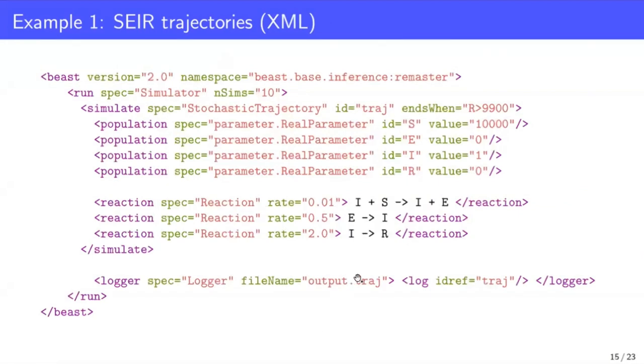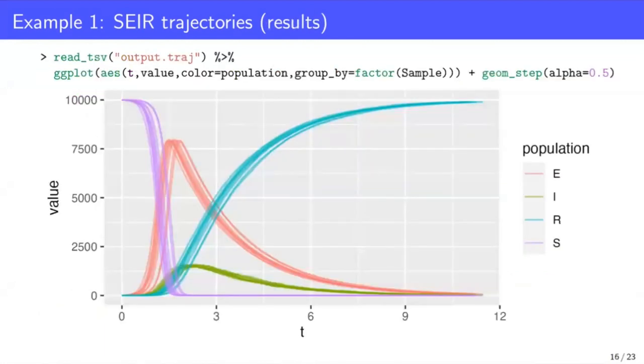The simulation XML for this SEIR model looks, or could look, like this. So again, we see that we have these four population elements here, defining the populations and their initial sizes. And we also have these three reactions that we've talked about. And finally, we also have this output specification that says we're going to write these trajectories to this output.traj file. This output file, once the analysis is actually run, can be read directly into R and plotted with something like ggplot to produce this kind of graphic, where we can see the dynamics of each of these four compartments over time. What we're seeing here is actually several realizations of this process independently produced by Remaster.